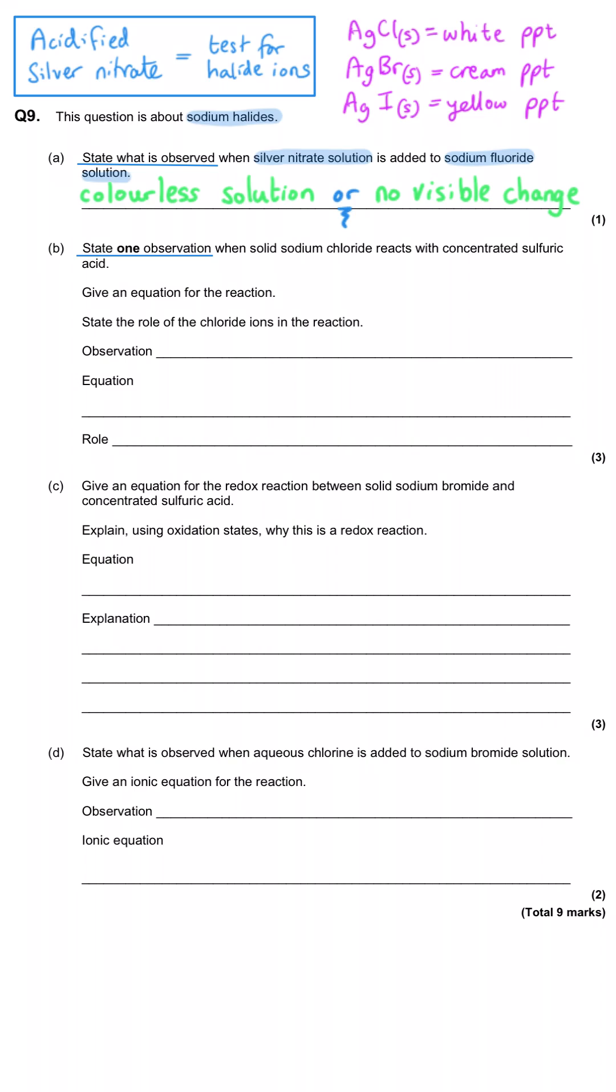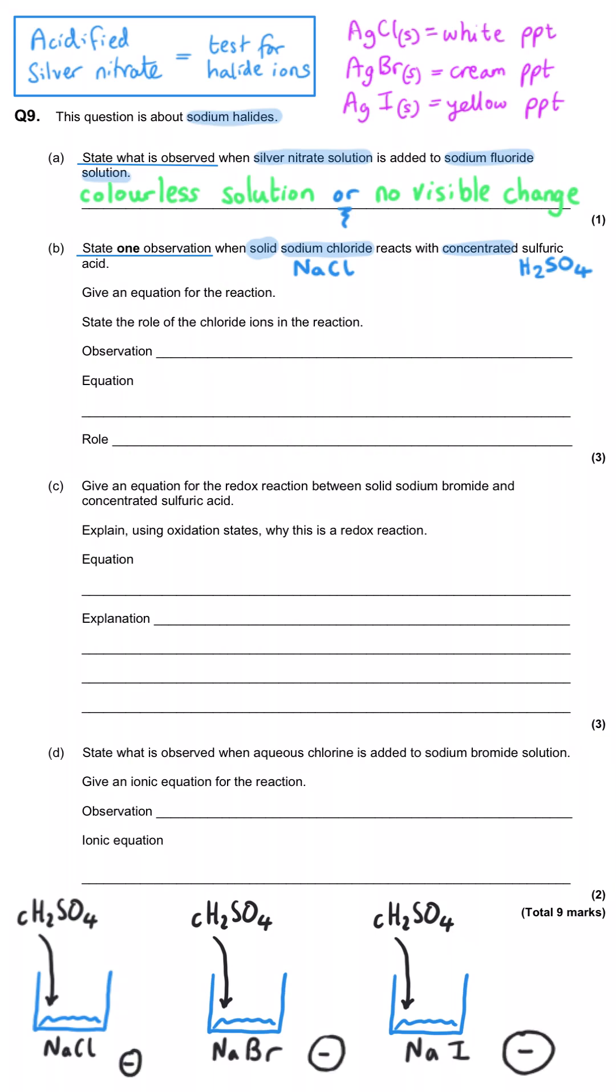State one observation when solid sodium chloride reacts with concentrated sulfuric acid. This is a reaction that proves the reducing ability of the halide ions, and we can get various sulfur-containing products formed. However, sodium chloride, specifically chloride, doesn't do very much. Chloride is not a very good reducing agent because it is a very small ion.